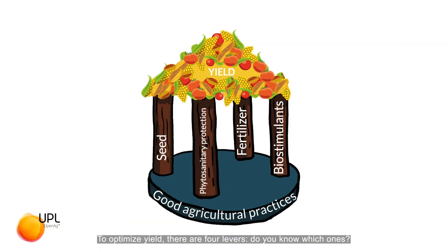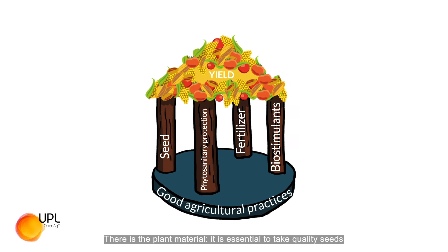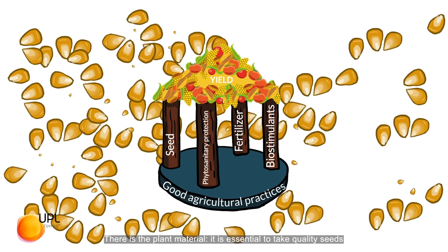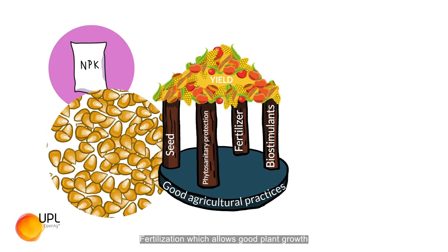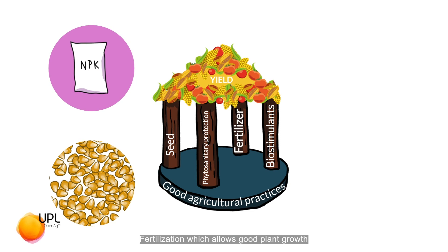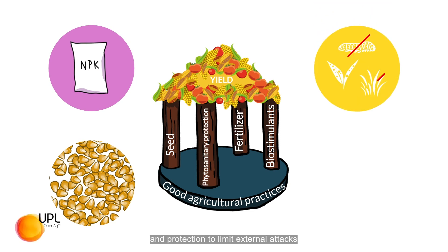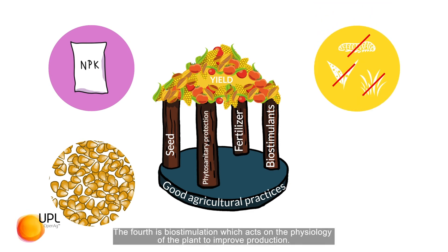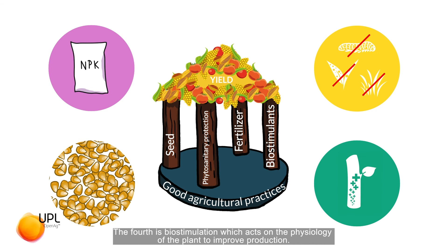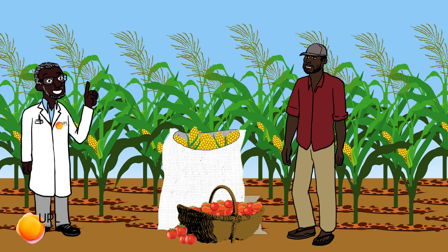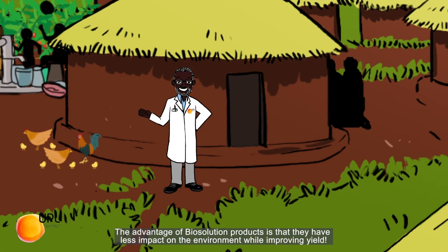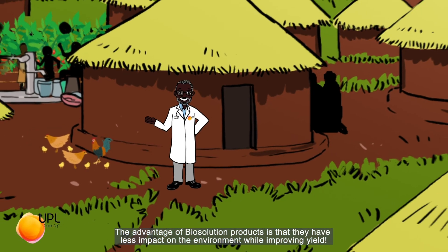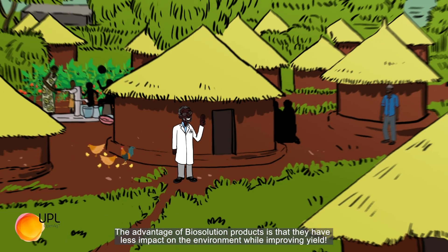To optimize yield, there are four levers. The first is plant material — it is essential to take quality seeds. The second is fertilization, which allows for good plant growth. The third is protection to limit external attacks. The fourth is biostimulation, which acts on the physiology of the plant to improve production. The advantage of biosolution products is that they have less impact on the environment while improving yield.